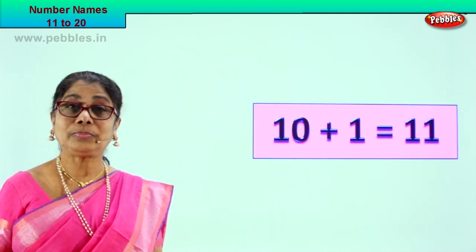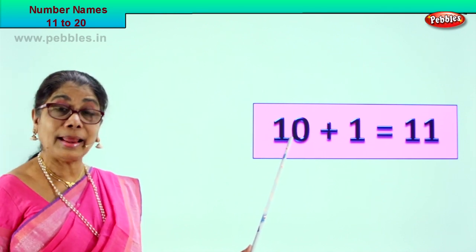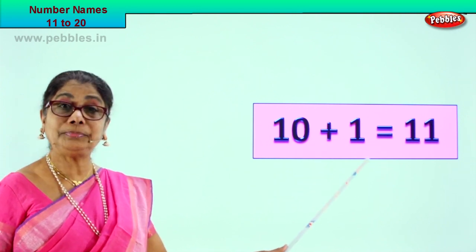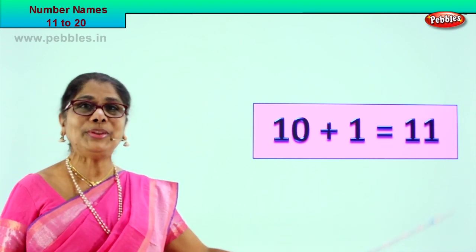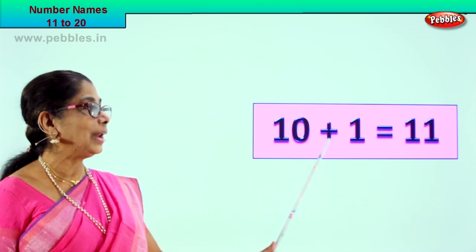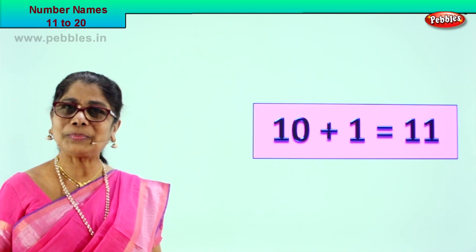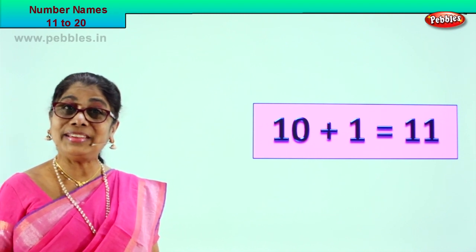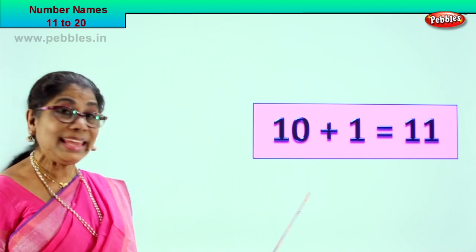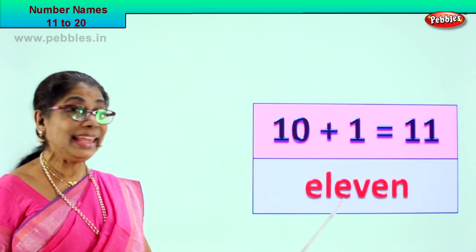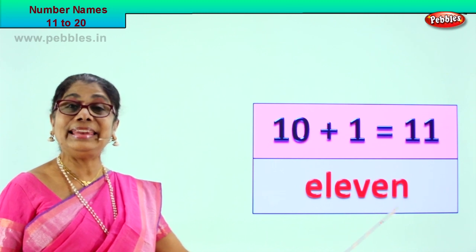Look what we have here. What do you see here? We have 10 plus 1, that is 10 plus 1 is equal to 11. We know to write 10 plus 1 equal to 11. Now can you spell out and write the name? 11. How do you spell 11? E, L, E, V, E, N. 11.